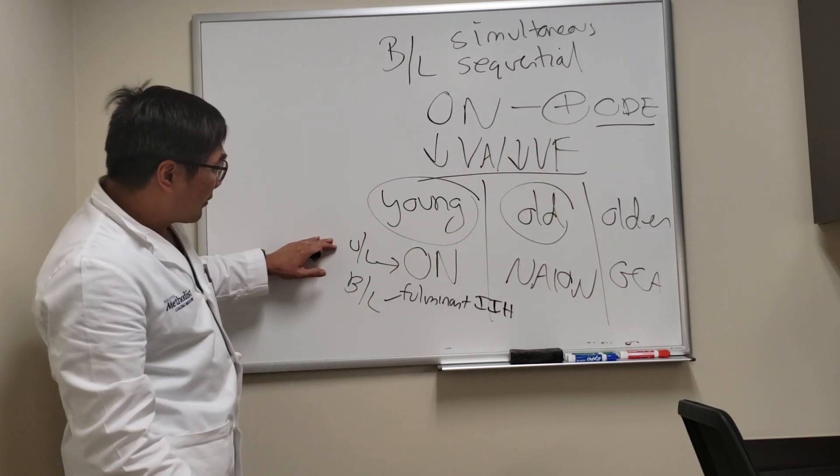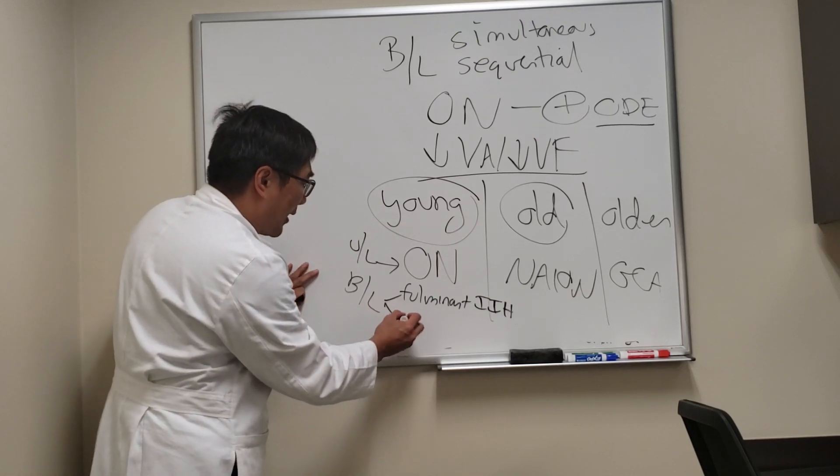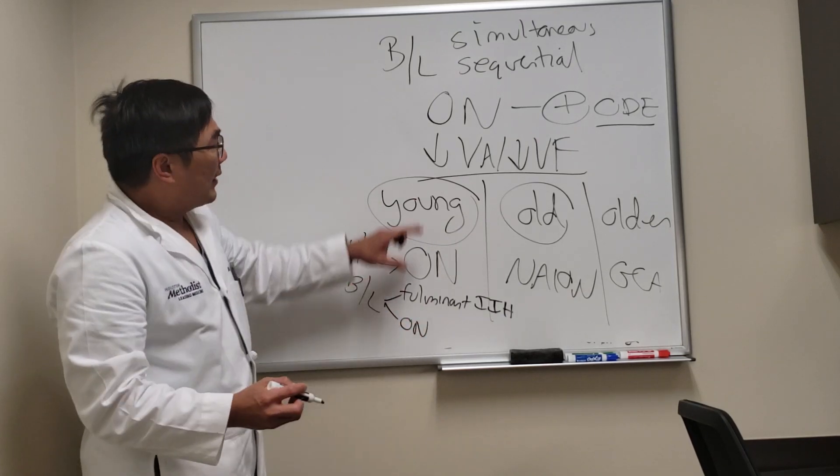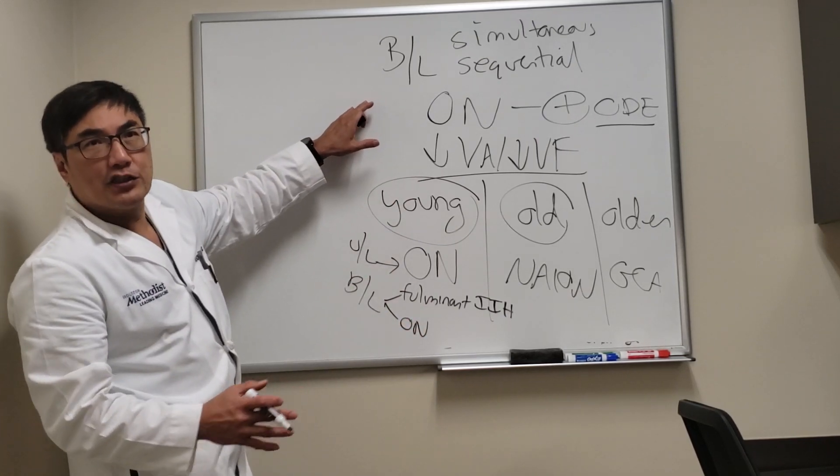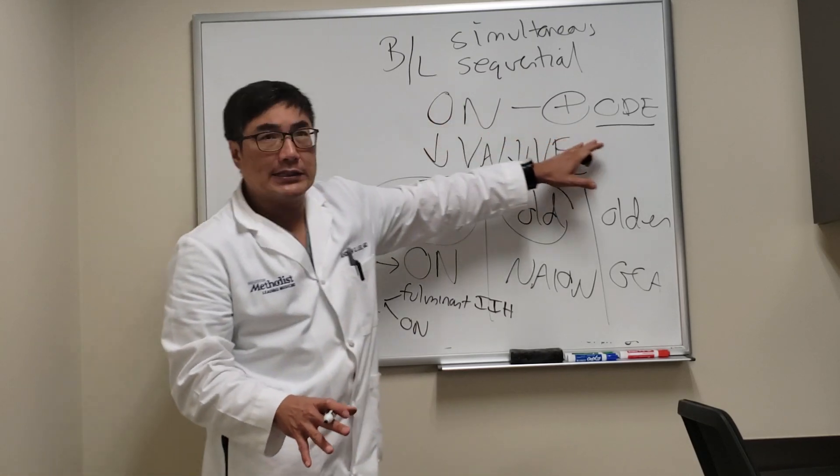If it's unilateral optic neuritis, if it's bilateral we still have to think about optic neuritis, but most MS-related optic neuritis is retrobulbar, no disc edema.